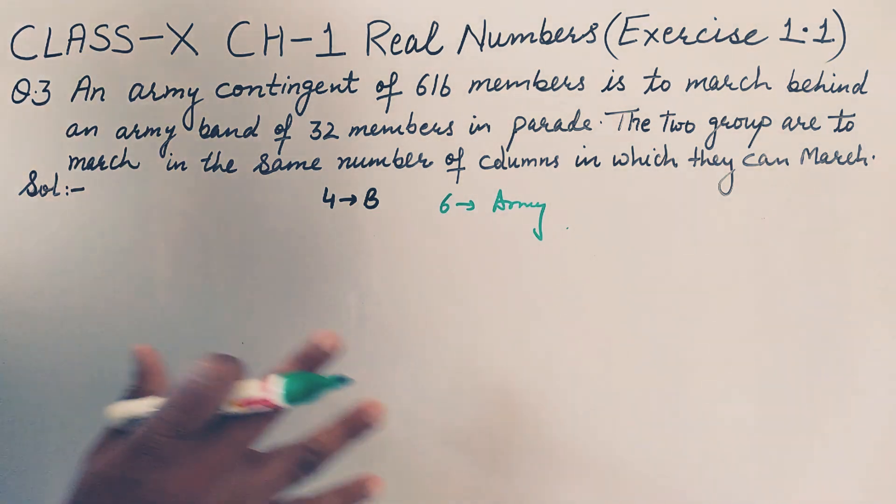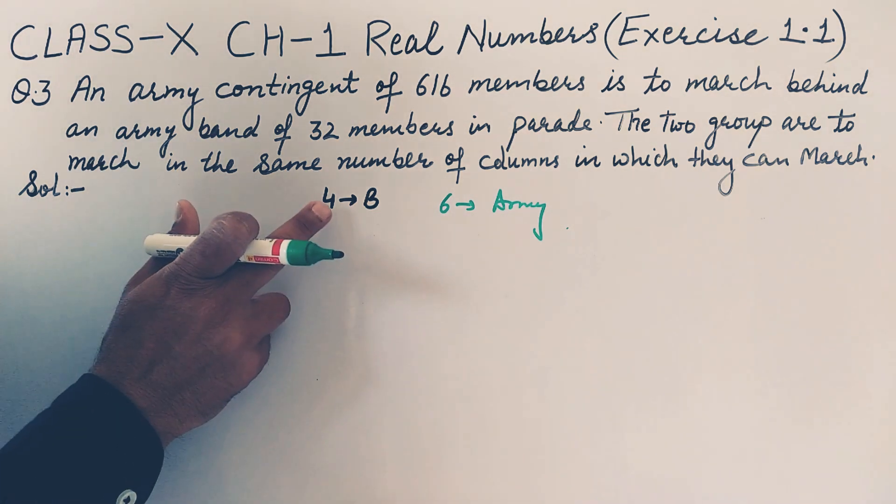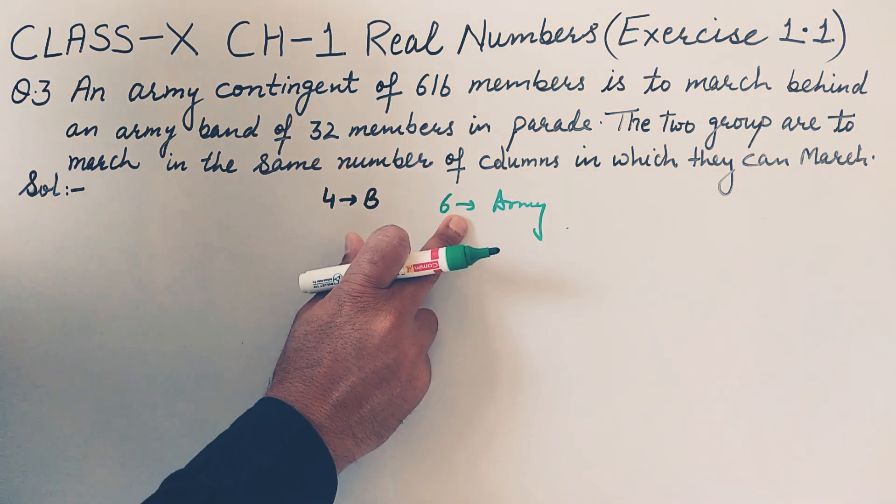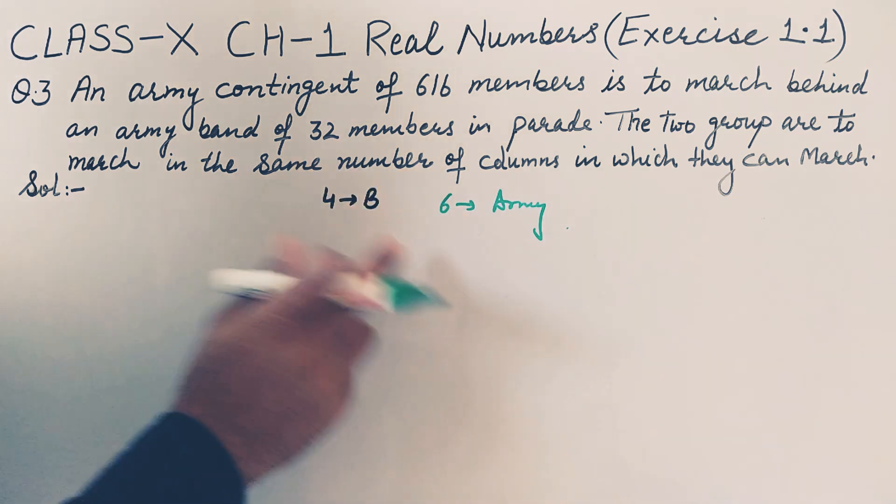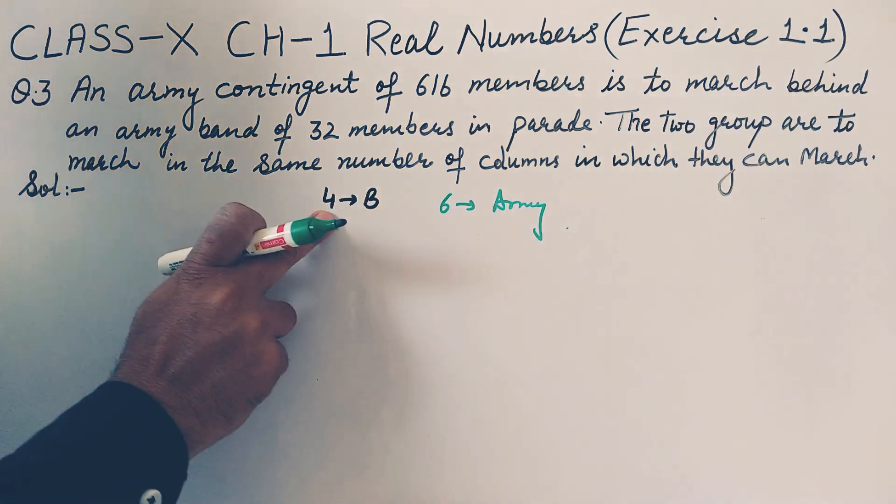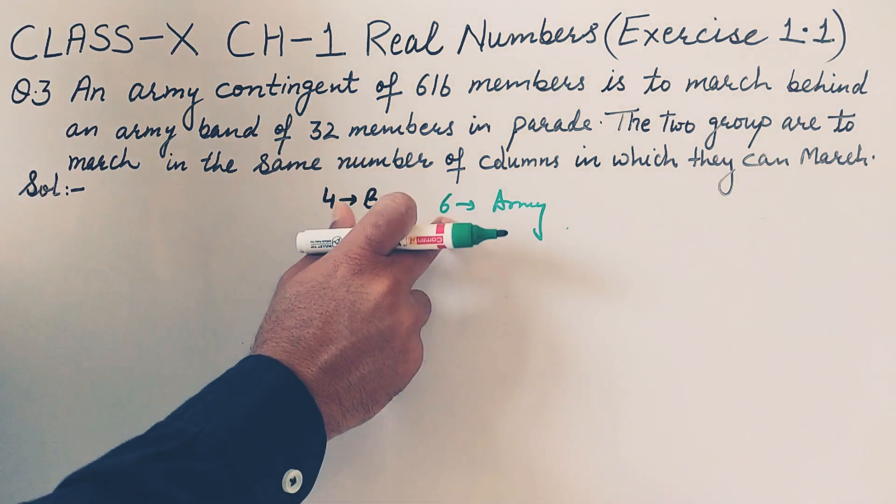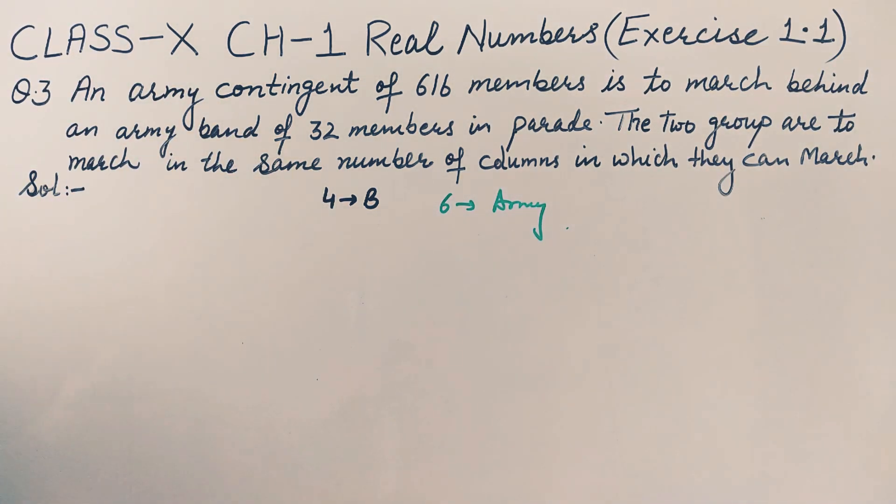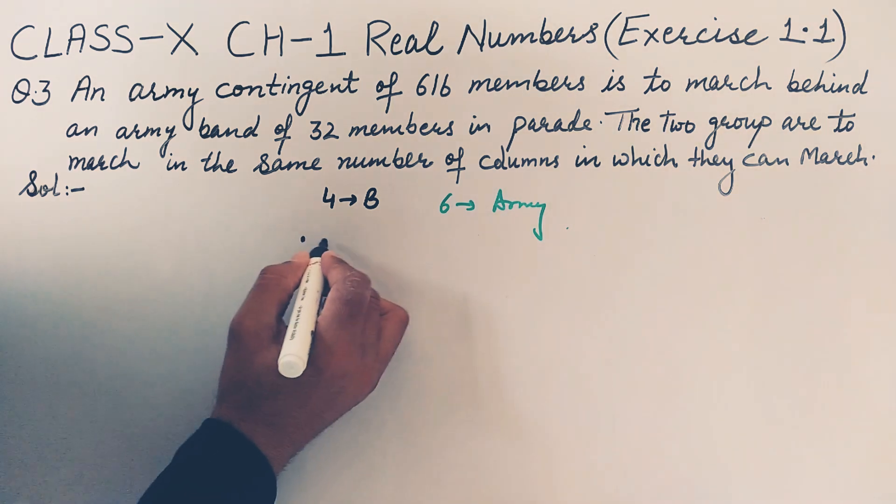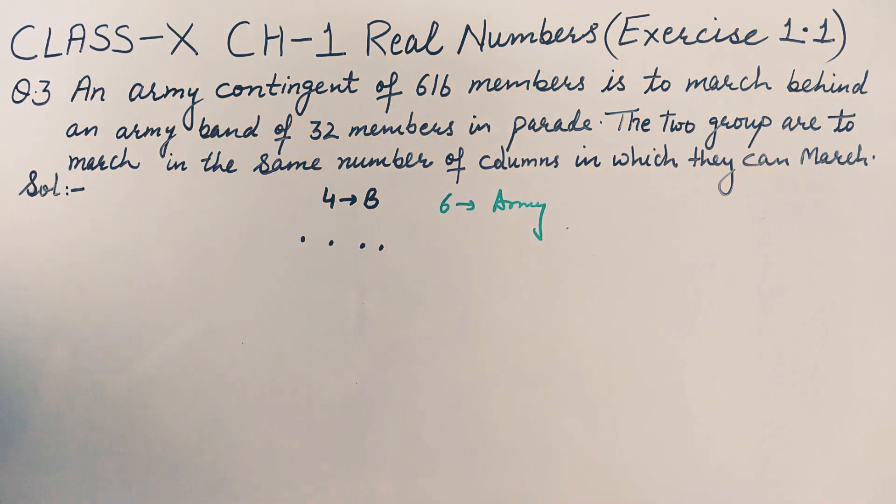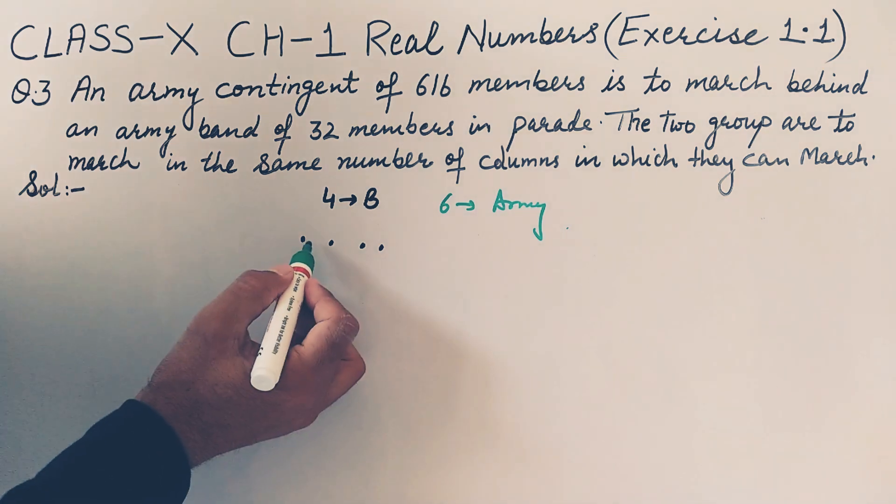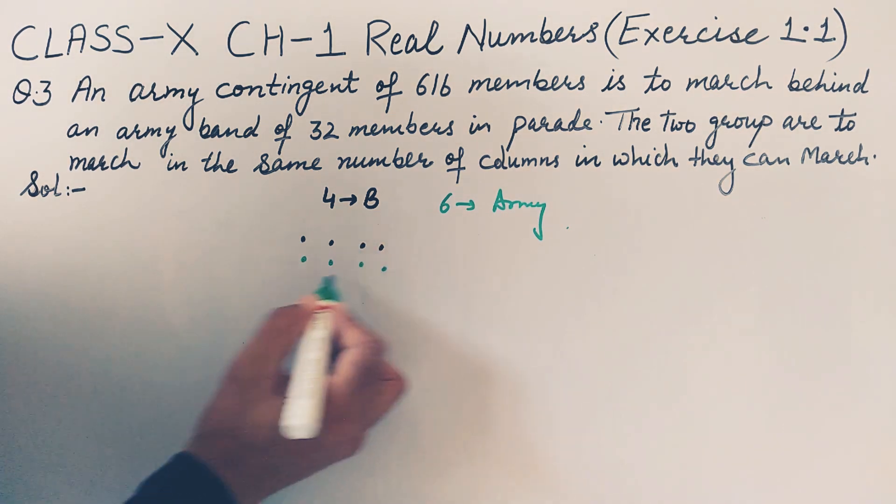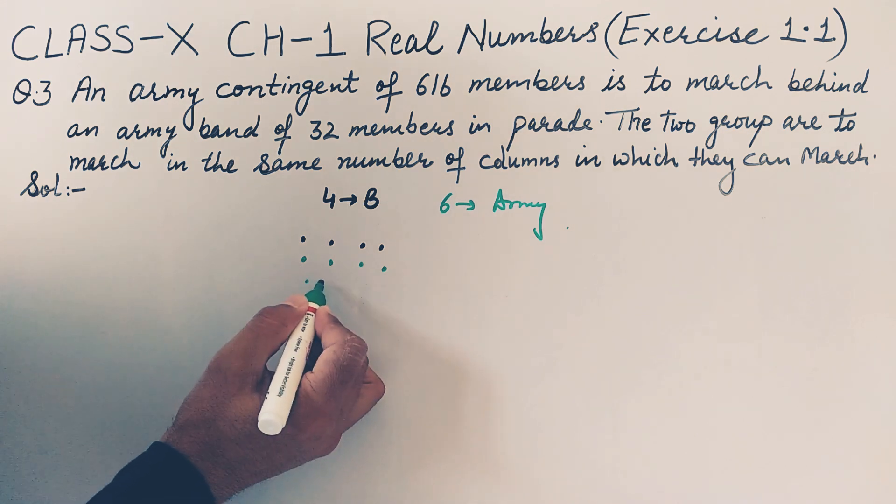We have to make them set such a way that they should march in the same number of columns. If they are coming in 4 columns, then these must be completed in 4 columns only behind this. Suppose in first case I'll take 4 band members in 4 columns: one, second, third, and fourth. Now army members are to be arranged behind that. One, two, three, four. Now two members are left.